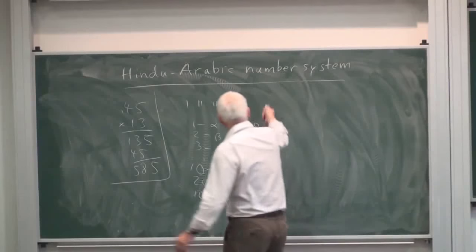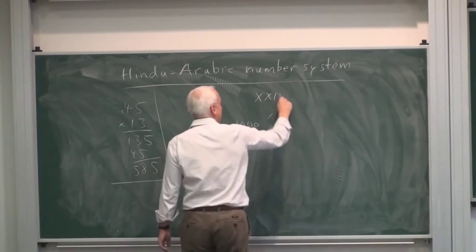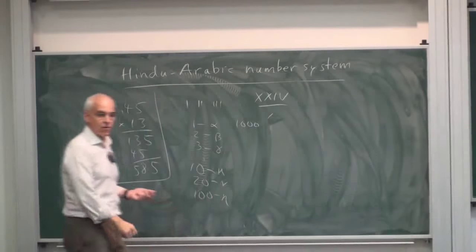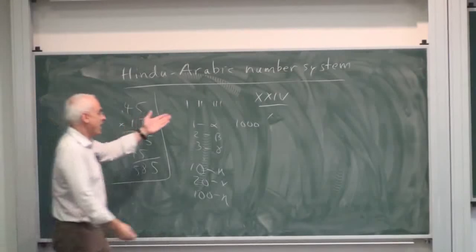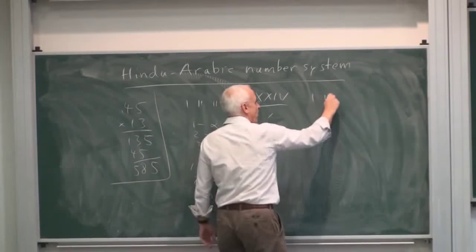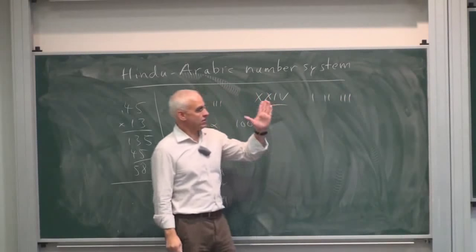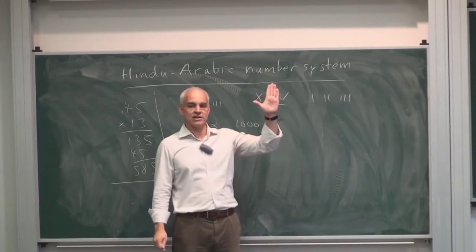Of course, we know the Romans gave us this system here, which lasted for a long time. It was also essentially hieroglyphic. One, two, three are like this, and then five.